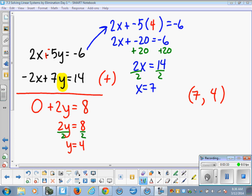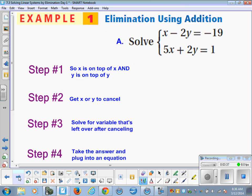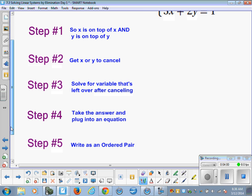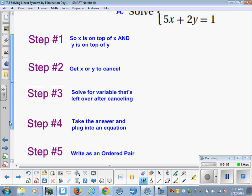So let's do a little bit more practice with some elimination problems. Okay, and then you're going to try 2 on your own. Okay, so one of the things I would like you to do one time in your notes is write down these steps. Okay, so step 1 is to write the equation so that x is on top of x and y is on top of y. Then you want to add them together to get x or y to cancel. Then you're going to solve for the variable that's left over after canceling. And then take that answer and plug it into an equation to get the other. And then write your answer as an ordered pair.